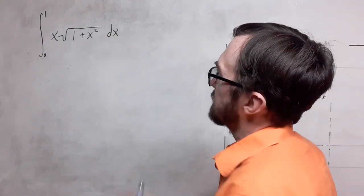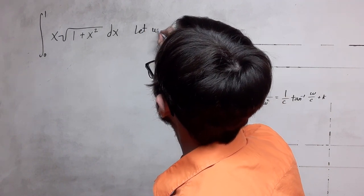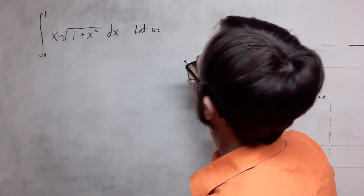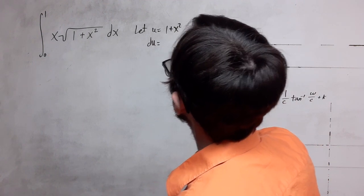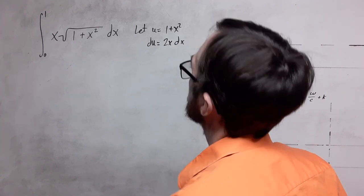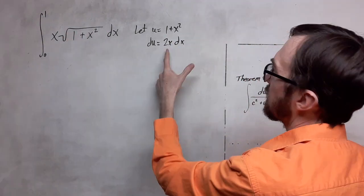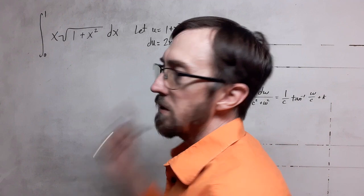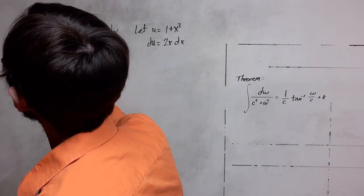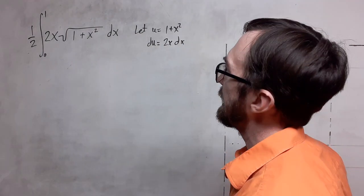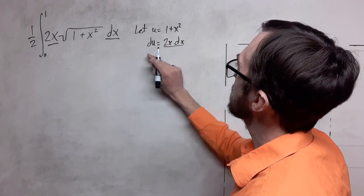First thing we're going to have to do is find the antiderivative. We're going to let u equal the expression under the radical here, and then take the derivative of that. We get 2x dx. Notice we have a 2 that we can connect with the dx, but we don't have the 2. We can use an integration factor here — put the 2 inside, and then on the outside multiply by 1 half.